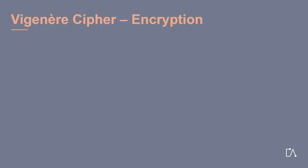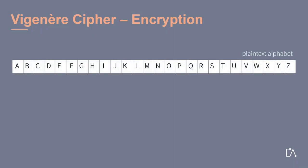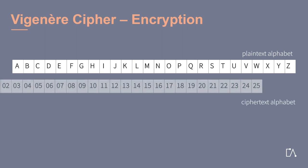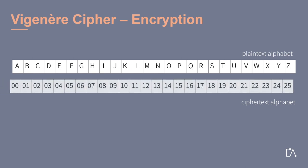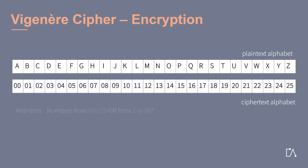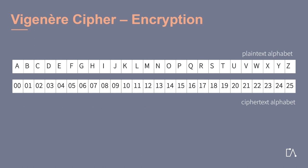For this cipher, we first have to convert our plaintext alphabet into numbers. We do this by simply numbering the letters from 0 upwards. However, the numbering could also start by 1. The communication partners must agree on this beforehand. Moreover, it is common to write down an initial 0 for 1-digit numbers to avoid any misinterpretations.